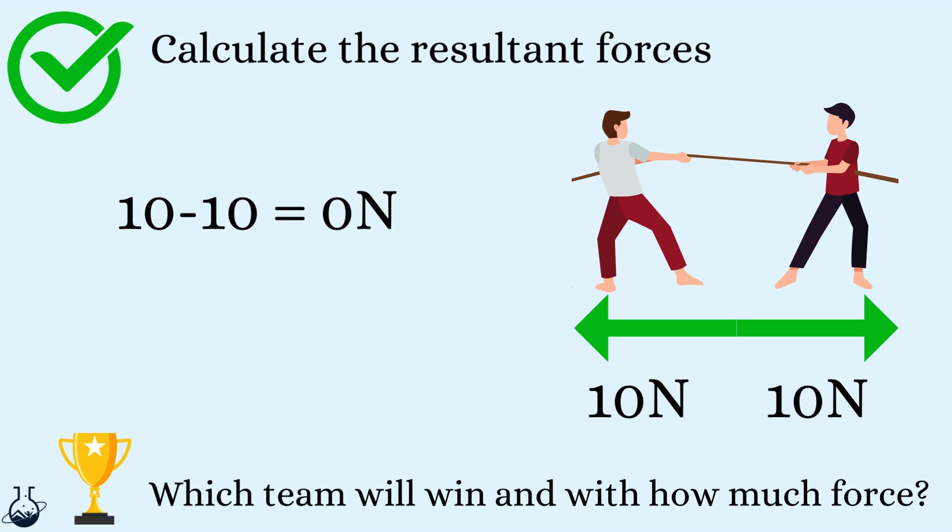And this final tug of war shows that there is a balance of forces. The difference between them is 0 Newtons. So the team will remain in tension but stationary until one team starts to pull with more force.